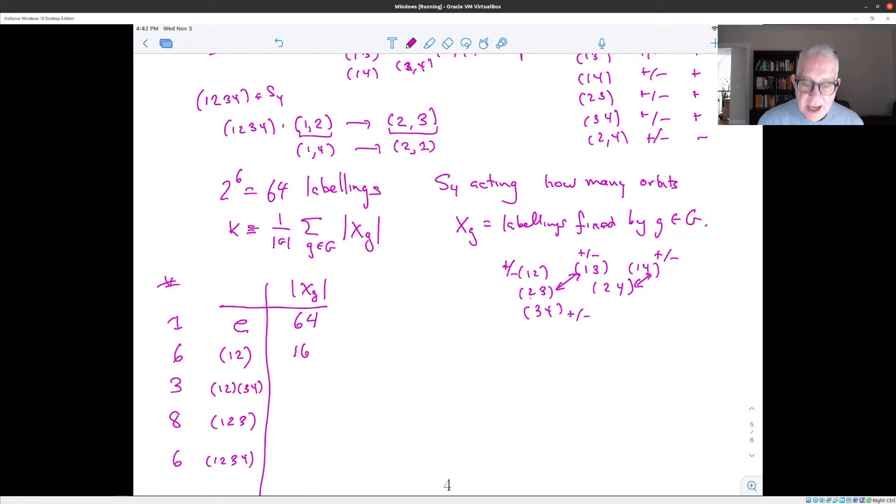Okay, what about a product of two transpositions? Well, let's work that out. Let's look at our six edges and let's ask, what does (12)(34) do? Well, (12)(34) leaves 1 and 2 alone. It sends 13 to 24. It sends 14, 1 goes to 2 and 4 goes to 3. So it sends 14 to 23. And it leaves 34 alone.